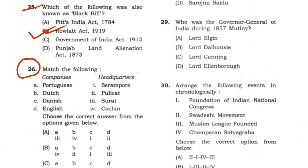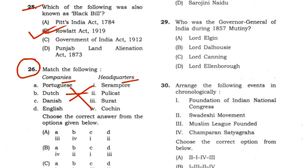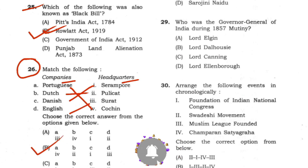Question 26: Match the following — company names on the left side with their headquarters on the right side. Portuguese: A to 4 (Cochin). Dutch: B to 2 (Pulikat). Danish: C to 1 (Serampur, a town in Bengal). English company: D to 3 (Surat). Answer: option B — A4, B2, C1, D3.